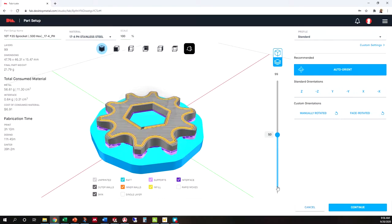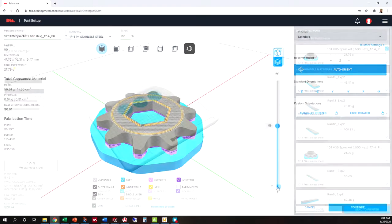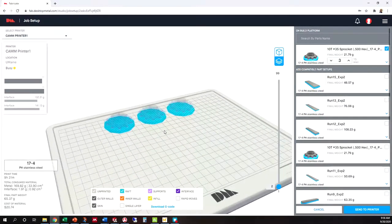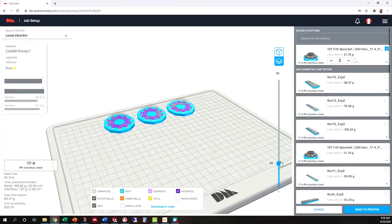Settings in the slicer can be modified to change things like the weight of the part, the strength of the part, the material type of the part, and the surface finish of the part.